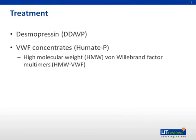Treatment of this disease is usually initially with desmopressin, or DDAVP. Desmopressin is an analog of vasopressin; when administered, it induces the endothelial cells to release von Willebrand factor into the bloodstream. Another treatment is von Willebrand factor concentrates, or HUMATE-P. These are concentrates that include high molecular weight von Willebrand factor multimers.